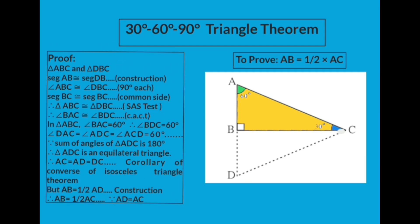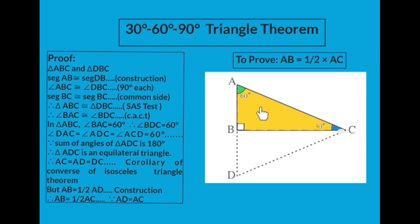Let's start the proof. By the construction, we get two triangles: triangle ABC and triangle DBC. In the first step, we prove these two triangles are congruent. By construction, segment AB is congruent to segment DB — reason: construction.